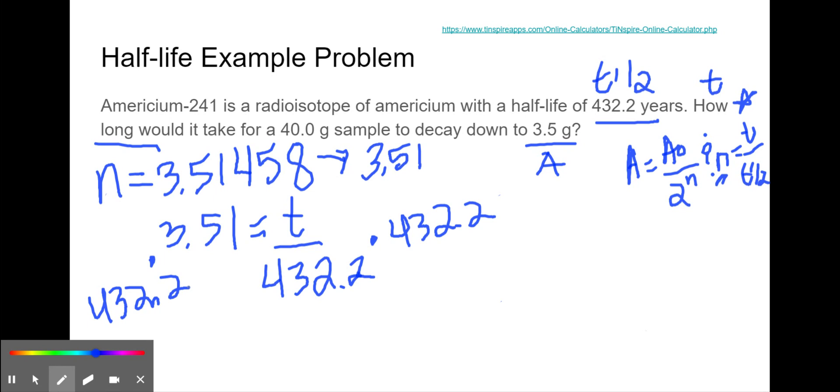So 3.51 equals T over 432.2. Multiply that on both sides to get T by itself, which gives a time of 1,517.02 years.